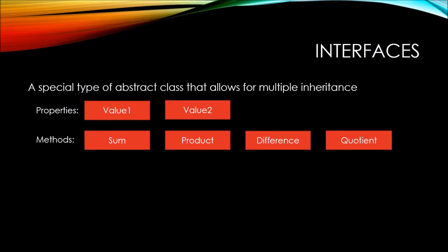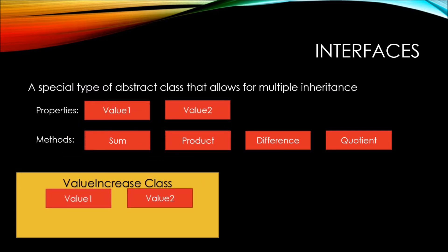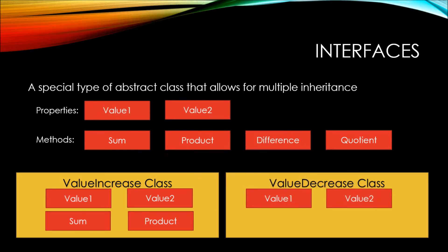Now that we have all of these multiple interfaces, we can use them to define a class. For example, if we have a ValueIncrease class, we can say it inherits from both the value1 and value2 interfaces, as well as the sum and product interfaces. If we have a ValueDecrease class, we can inherit from value1 and value2 interfaces, as well as the difference and quotient interfaces.